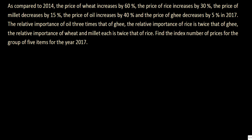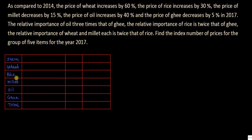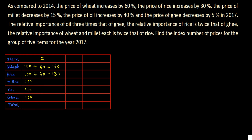Let us prepare our table. Items are wheat, rice, millet, oil, and ghee. The first column is the index number. Write 100 against each item as the base. Wheat increases by 60%, so 100 plus 60 equals 160. Rice increases by 30%, giving 130. Millet decreases by 15%, giving 85. Oil increases by 40%, giving 140. Ghee decreases by 5%, giving 95.